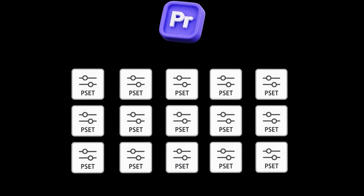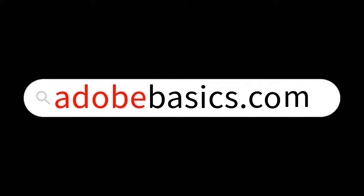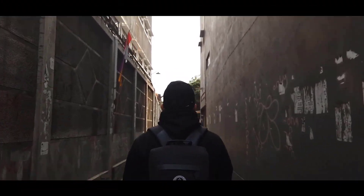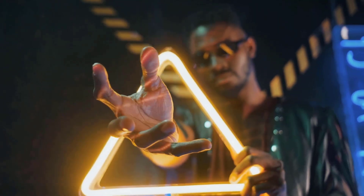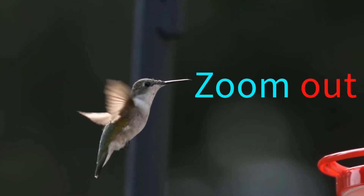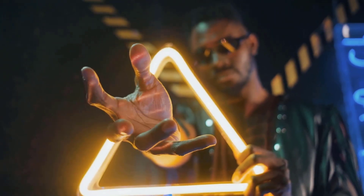In this video, I'll show you how to unlock and use 15 powerful free presets for Adobe Premiere Pro from AdobeBasics.com. Inside the pack, you'll find dynamic effects like smooth slide-in, cinematic bar in and out, slide down, slide transition, and both smooth zoom in and zoom out. Each one crafted with smooth motion blur to elevate your edits and save you hours of manual work.